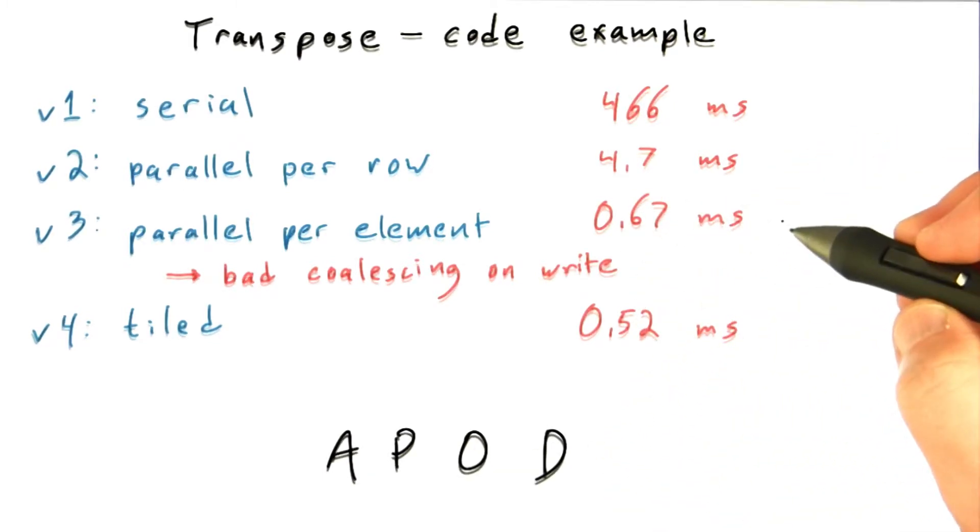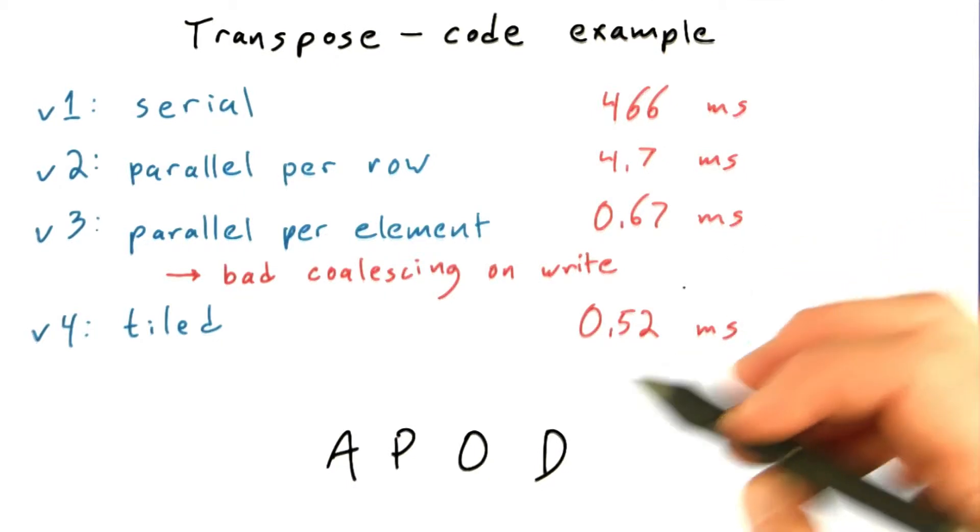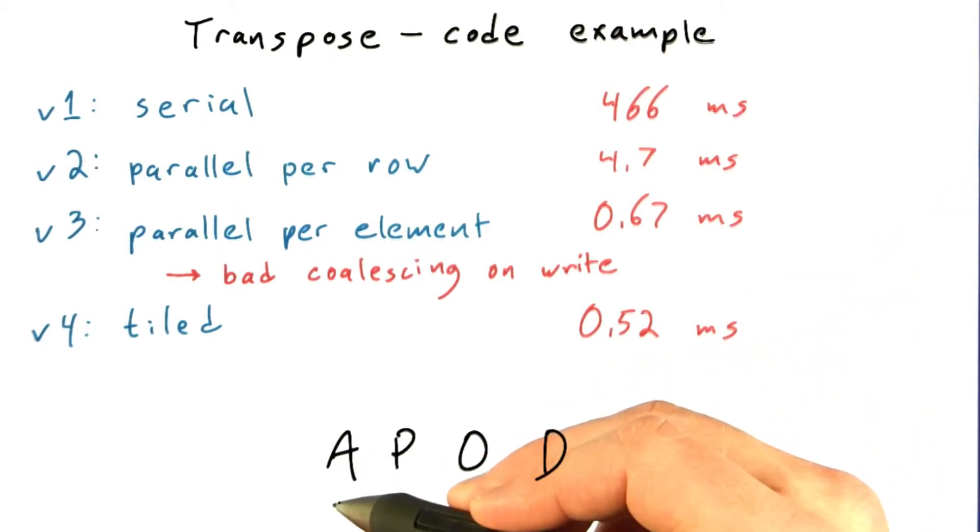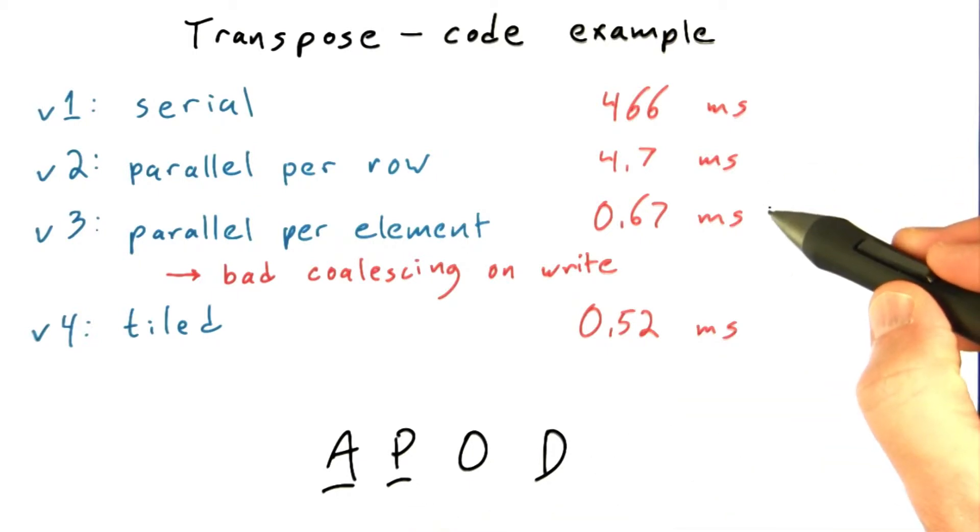This actually might be fast enough that you're ready to deploy it. We started by analyzing the code and deciding that this function of transposing matrix needed to be sped up. We started exploring ways to parallelize it, and this might be fast enough. This is already a place where you ought to look at this and say, is this the bottleneck anymore? Is speeding this up going to make a big difference to my application? If not, then deploy.